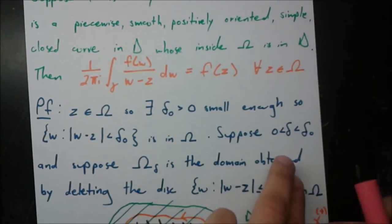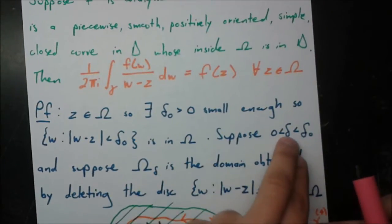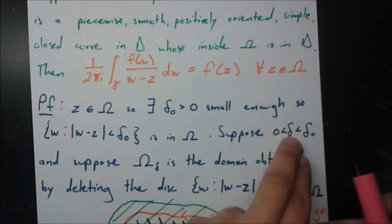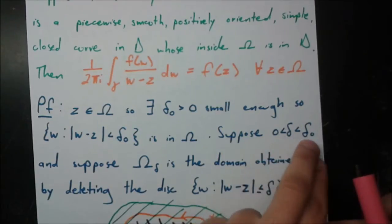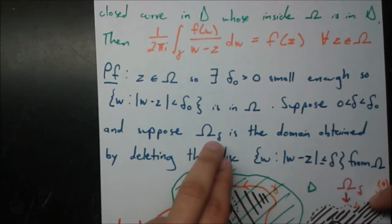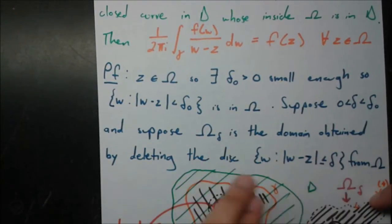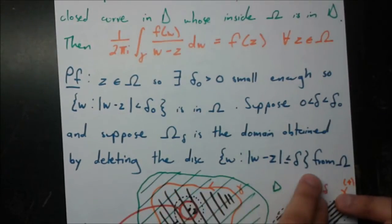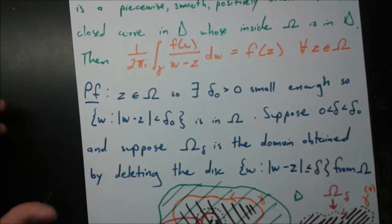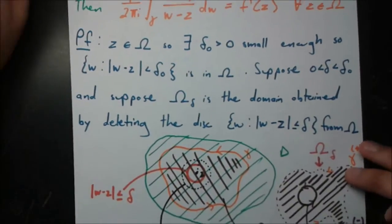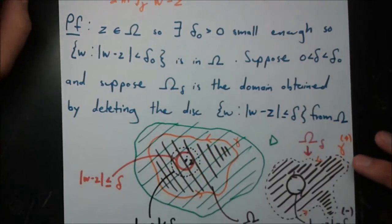Suppose now we have an even smaller positive number delta, sandwiched between 0 and delta_0. And suppose omega_sub_delta is the domain obtained by deleting that smaller disk from omega. This is all very confusing, so let's look at the picture and make sense of it piece by piece.